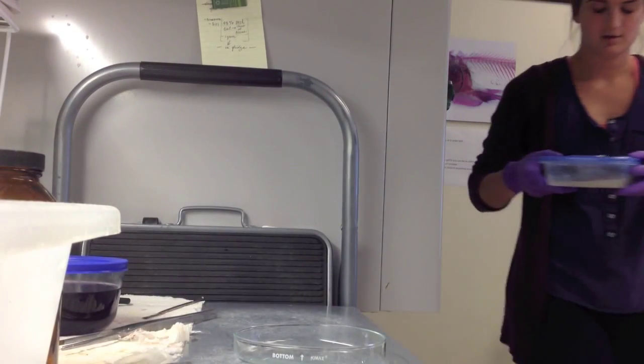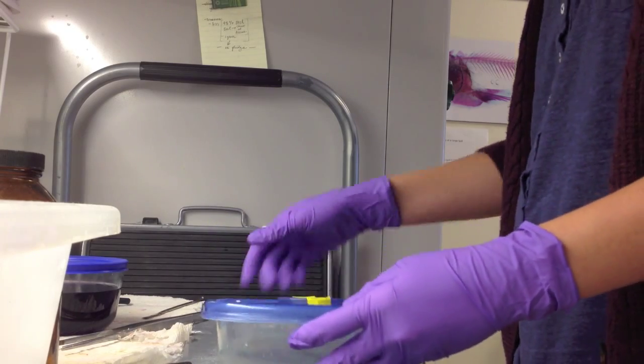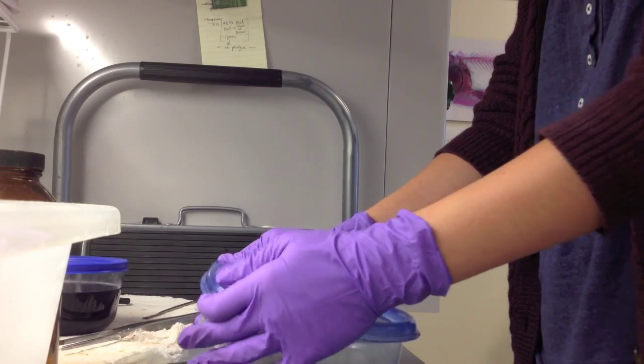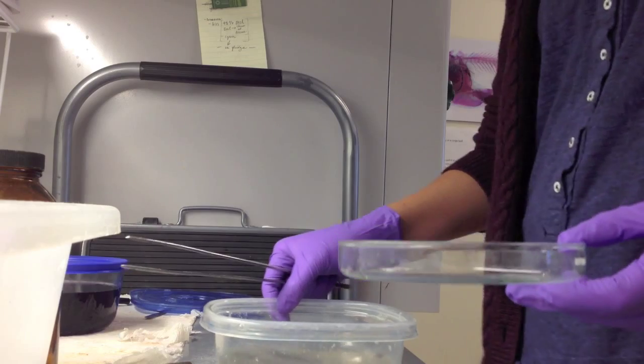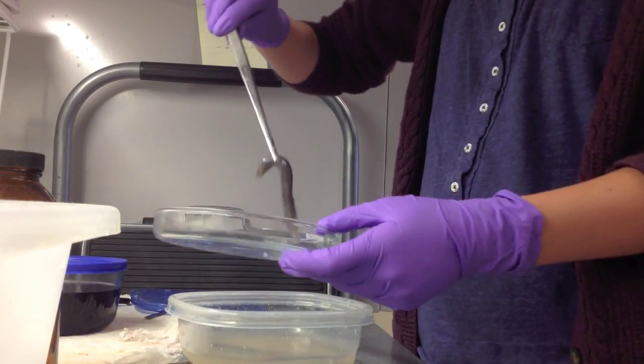Next, we place our specimens in trypsin. The trypsin solution is 7 parts distilled water, 3 parts saturated sodium borate, and 10 grams of trypsin powder per liter of solution. Trypsin is an enzyme that will digest the muscles of the specimen, so it becomes clear and pliable. We keep specimens in the solution until the vertebral column becomes visible.